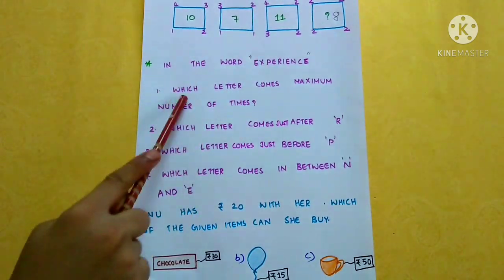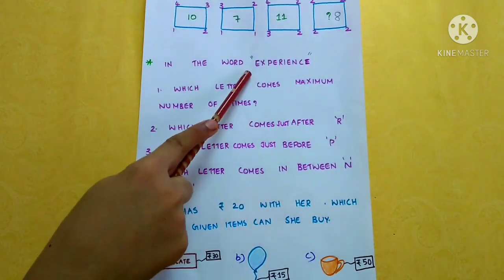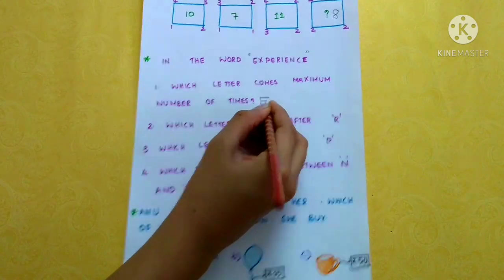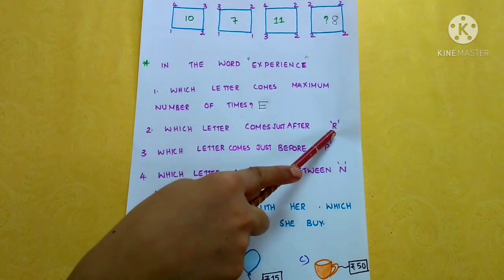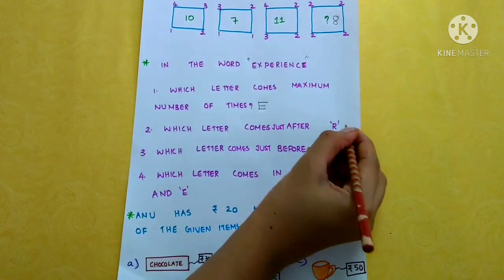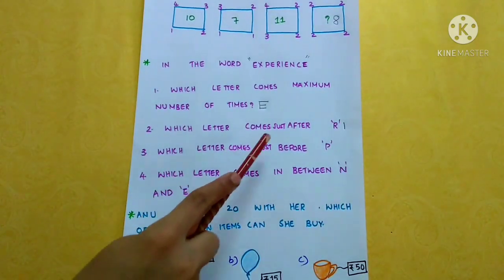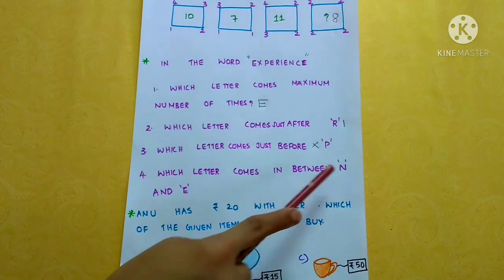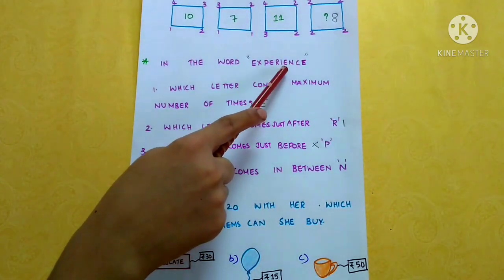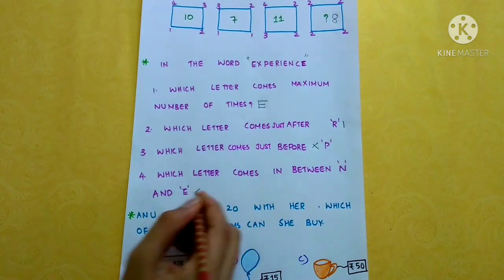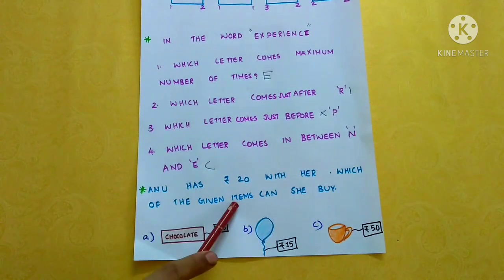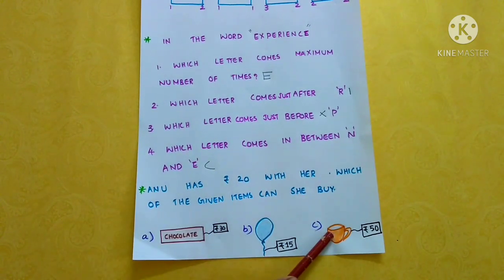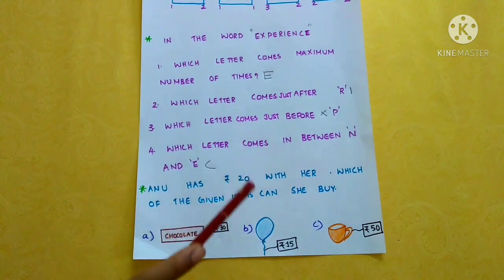In the word 'experience,' which letter comes the maximum number of times? The letter E comes 4 times. Which letter comes just after R? — I. Which letter comes just before P? — X. Which letter comes in between N and E? — C. Anu has 20 rupees with her. Which of the given items can she buy? Chocolate costs 30 rupees, Balloon costs 15 rupees, Cup costs 50 rupees. Chocolate and Cup are above the given amount, so she cannot buy those items — she can buy the Balloon.